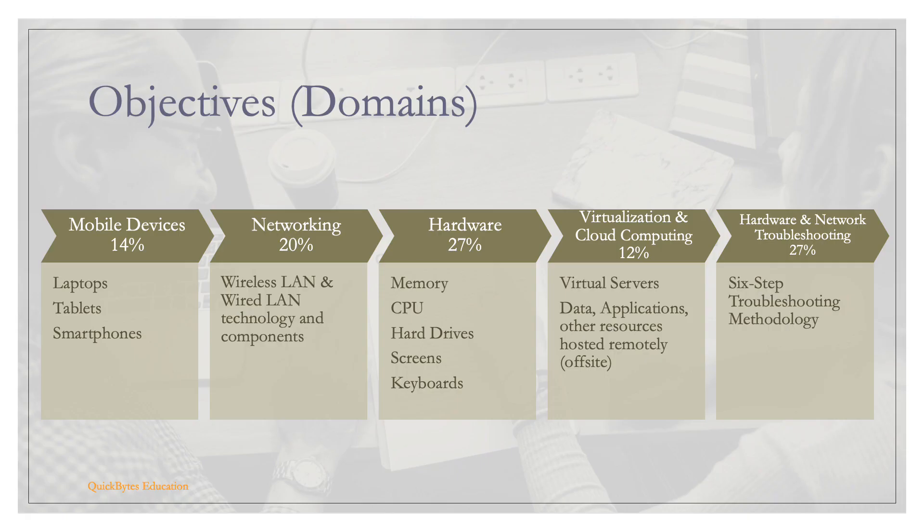These are the objectives or domains for the CompTIA A-plus 220-1001 exam. First is mobile devices, which makes up 14% of the exam — it covers laptops, tablets, and smartphones. Networking is 20%, covering wireless and wired LAN technology and components.